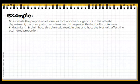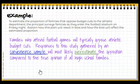Example: to estimate the proportion of families that oppose budget cuts to the athletic department, the principal surveys families as they enter the football stadium on Friday night. Explain how this plan will result in bias and how the bias will affect the estimated proportion. Families who attend football games will typically oppose athletic budget cuts. Responses gathered by a convenience sample at the stadium will most likely overestimate the opposition compared to the true opinion of all high school families — you would not get the same result at a football game as you would at a band concert.